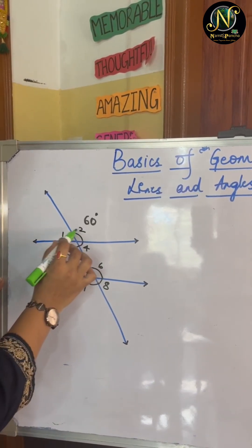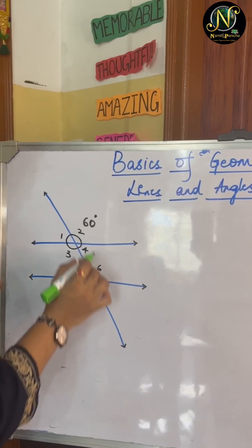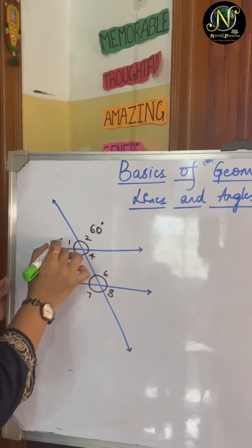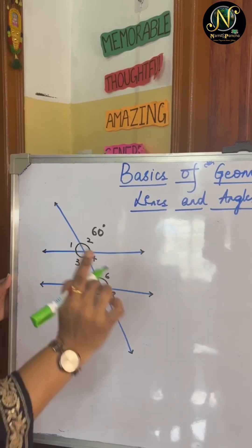So you can see here 1, 2, 3, 4, 5, 6, 7, 8 are the eight angles. Just by having data of one angle, we can find all other angles. I will show you how.